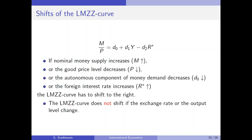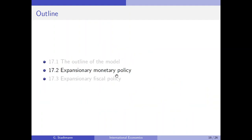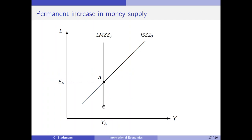We would like to know how an expansionary monetary policy or an expansionary fiscal policy is digested — whether it is possible to influence GDP through these policies. We bring together the LMZZ curve and the ISZZ curve in one diagram and compute the initial equilibrium at point A, where the ISZZ and the LMZZ curves intersect. There we find the equilibrium GDP level and the equilibrium level of the exchange rate.